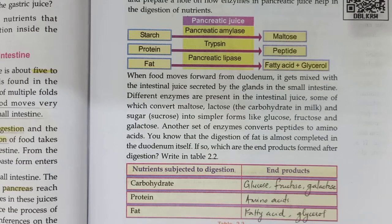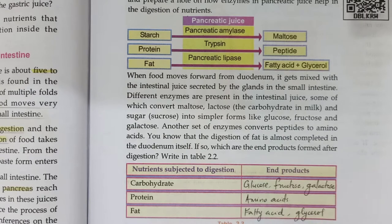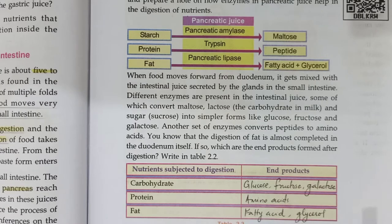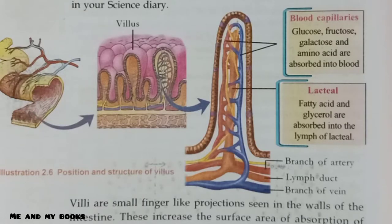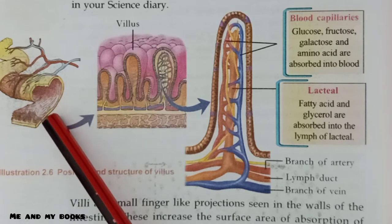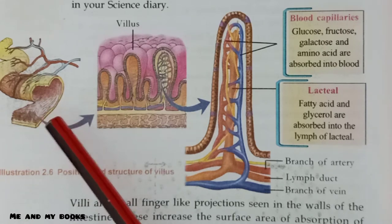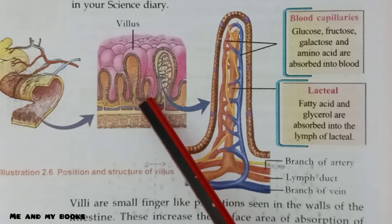Now all these simple nutrients are in the small intestine. The next process is absorption — these simple molecules are absorbed by our body and sent to different parts. Inside the small intestine there are many finger-like structures called villi. Villi help in the absorption process.